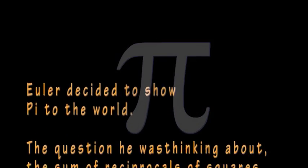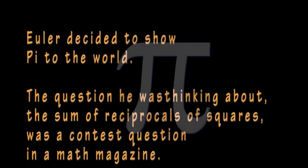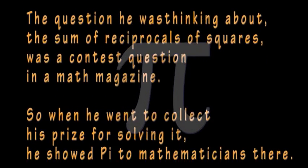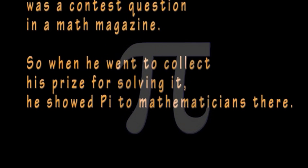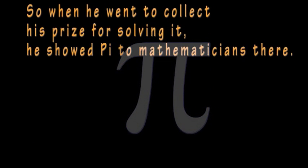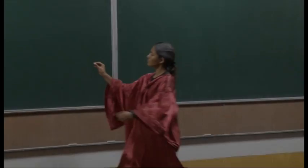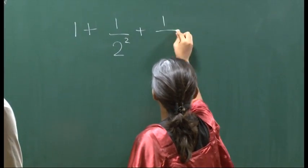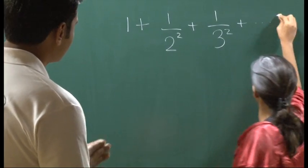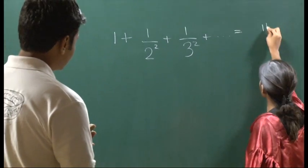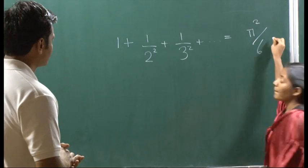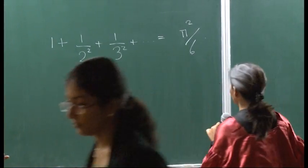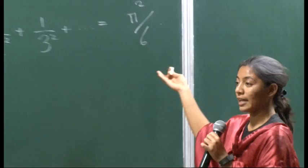Euler decided to show pi to the world. The question he was thinking about, the sum of reciprocals of squares, was a contest question in a math magazine. So when he went to collect his prize for solving it, he showed pi to the mathematicians there. So the answer turns out to be phi squared over 6, where the ratio of the circle's circumference to its diameter, I denote by the Greek letter phi.